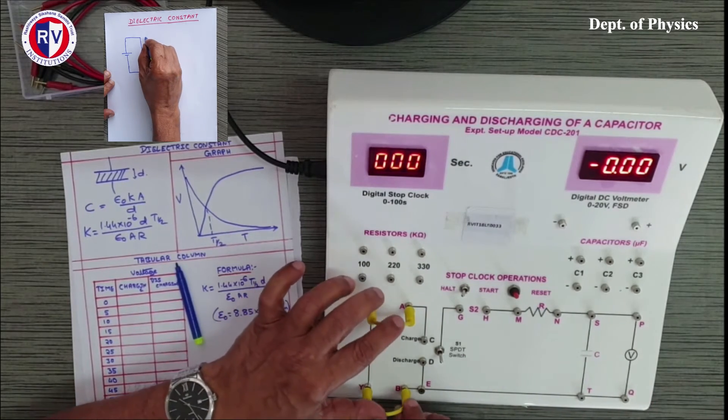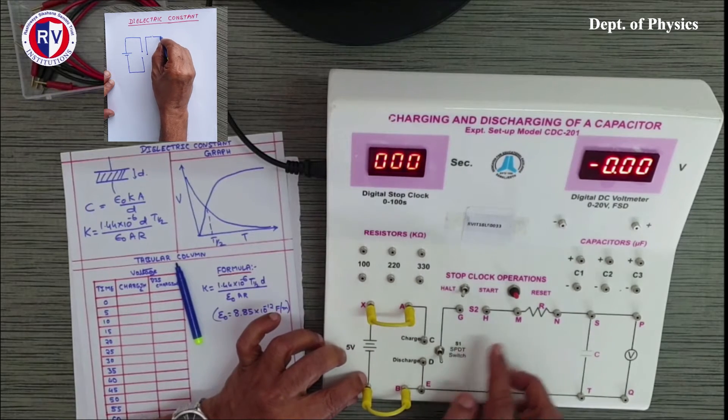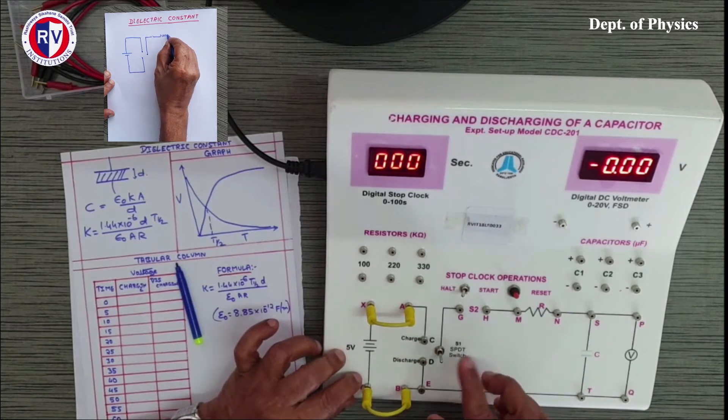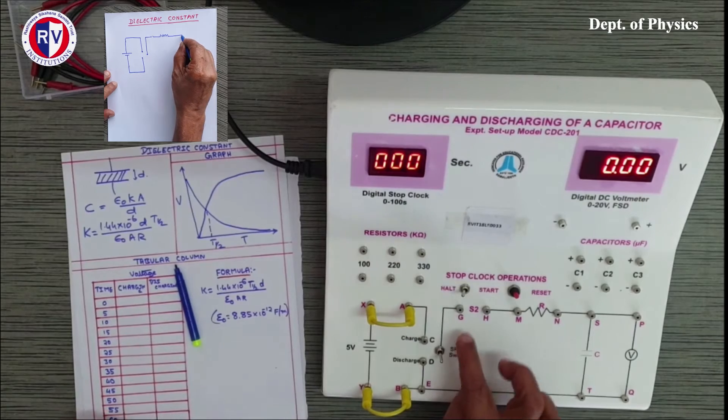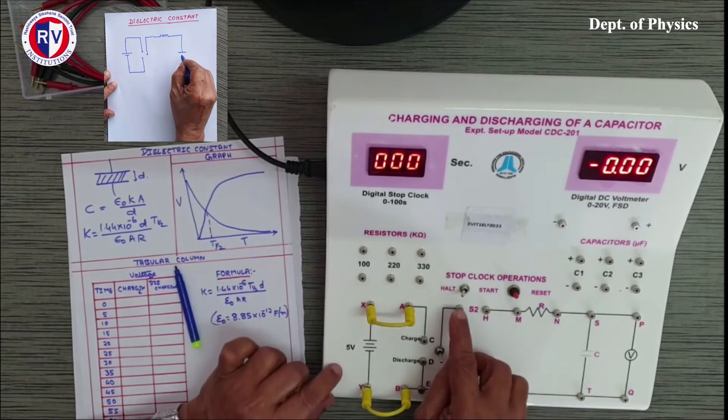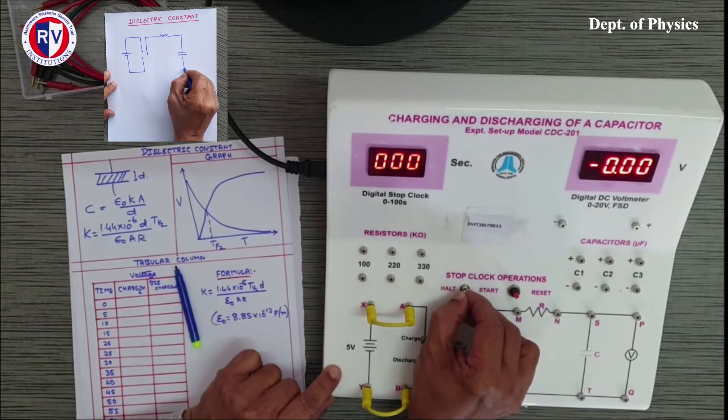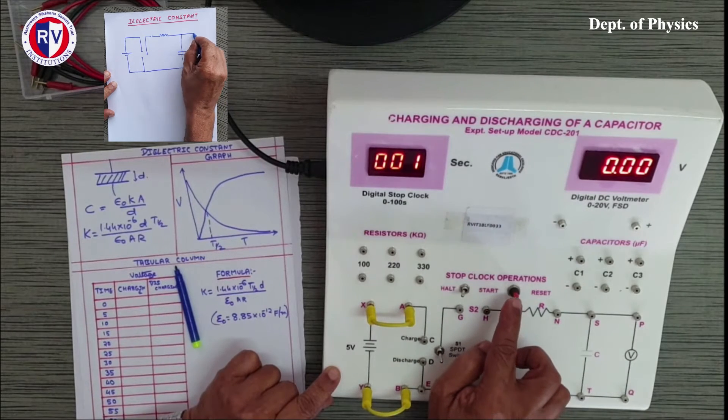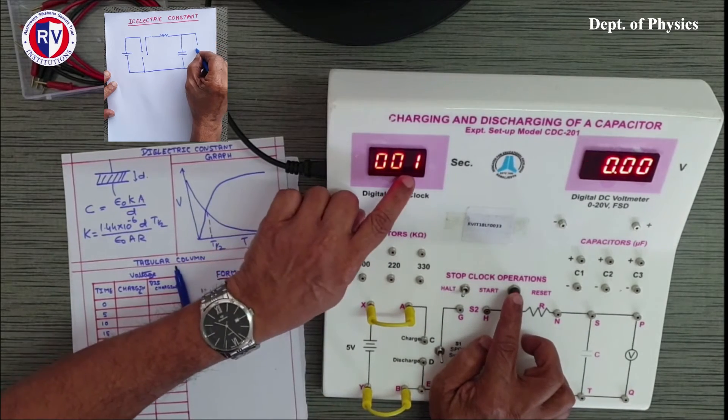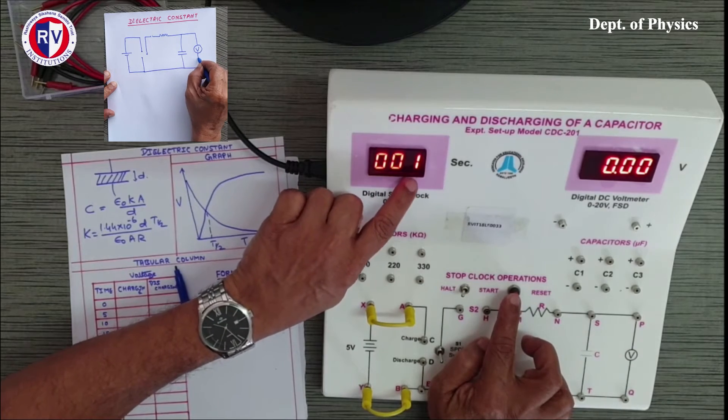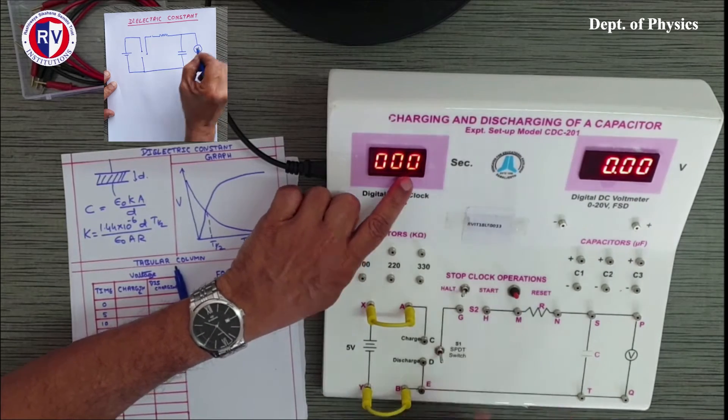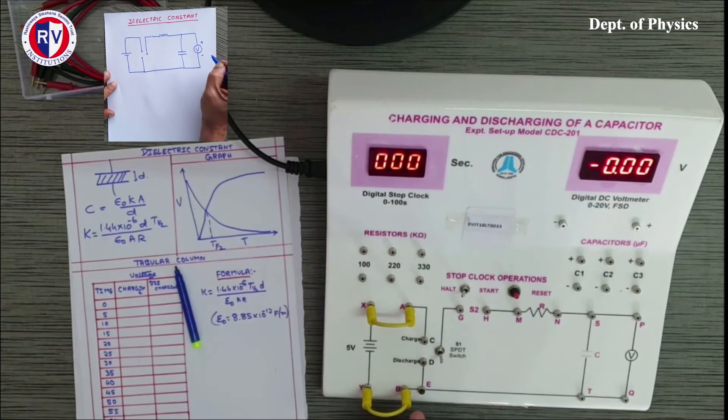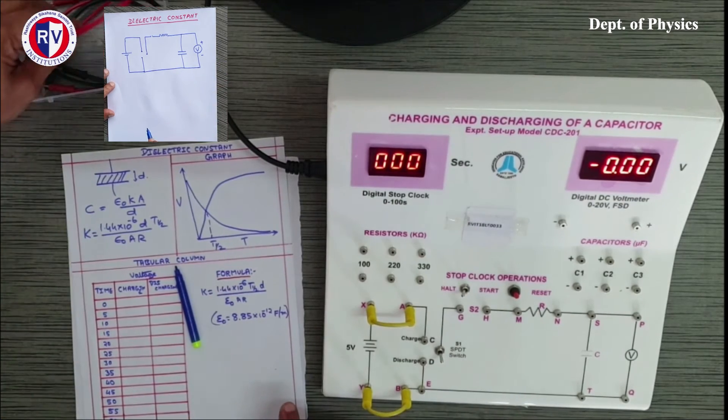When in charging mode, voltage increases; in discharging mode, voltage decreases. We have another switch. This switch is just like a key, to start or stop the current. The reset button is used to reset the clock. Now it is showing one second. To reset, you can press this, so it will come to zero.